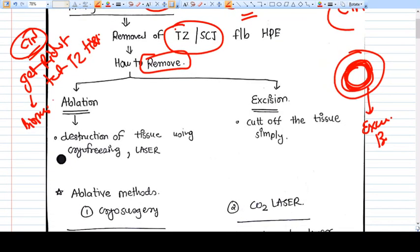The first are the ablative techniques and then comes excision. What is ablation? Ablation means destruction of tissue using cryo freezing or laser. For example, this is the tissue and this is the abnormal tissue. With ablative procedures we will just crush these tissues.